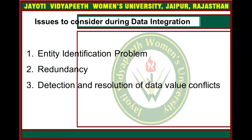The second issue is redundancy. Redundancy means duplication. An attribute can be redundant if it can be derived from another attribute, or from a collection of attributes. Attribute or dimension naming differences can also lead to redundancies in the resulting data collection. Redundancy can be detected by correlation analysis.